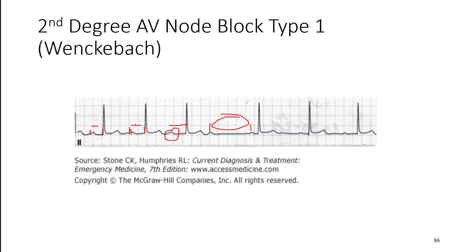Typically this occurs in a routine fashion. In this example, we've got one, two, three conducted beats before it drops out — and you might see that pattern quite consistently, maybe three before a dropout or four before a dropout, with a progressively increasing PR interval.